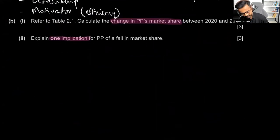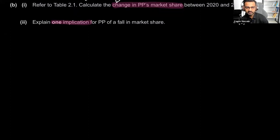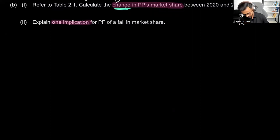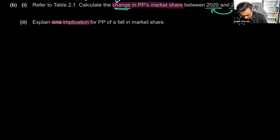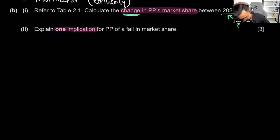Part B is a calculation question, along with a three-mark short answer. Always read the first part — they tell you where to look for information. It says refer to Table 2.1, and that's the only information we need. Calculate the change — this is important. You can't just calculate it for one year. Whenever there's a change, there'll be two different points. They want you to calculate the change in PP's market share between 2020 and 2021. Whenever they ask for a change, two numbers must be subtracted from one another.